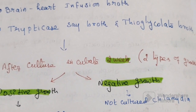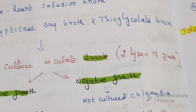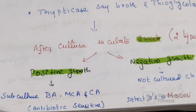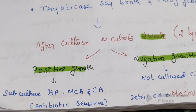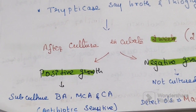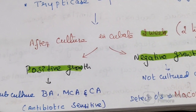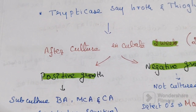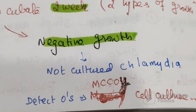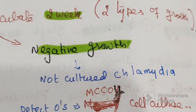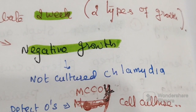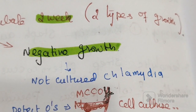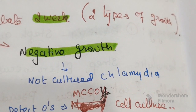After culture, the sample is incubated and there can be two types of growth: positive or negative. In the case of positive growth, subculture media are needed, such as blood agar, MacConkey agar, and chocolate agar medium, followed by identification and antibiotic sensitivity testing. In negative growth, to detect the organism, McCoy cell culture is performed.